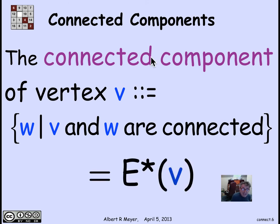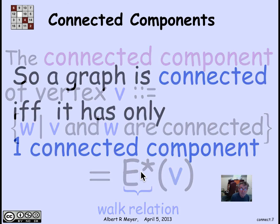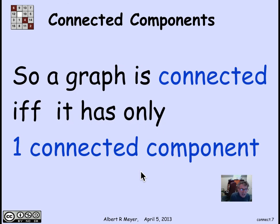Another way to define this, the set of W that are connected to V, is simply taking the image of V under the greater than or equal to 0 walk relation. E star is our notation for the walk relation in the graph whose edges are E, including walks of length 0. So a graph is connected, then, means really that it has only one connected component.